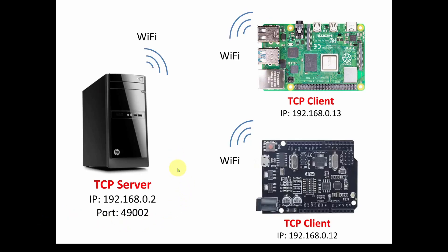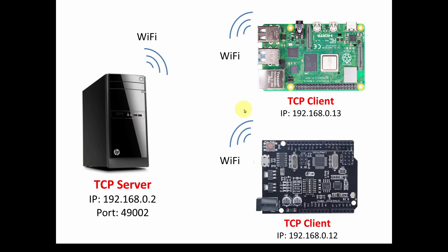Welcome back. Today we're going to show you how to set up a system of multiple devices that can communicate over Wi-Fi. On the top right we've got a Raspberry Pi, and on the right we've got an Arduino that has built-in Wi-Fi — a very inexpensive, only about ten-dollar Arduino Uno with built-in Wi-Fi. We also have a desktop operating as a TCP server. We recently did a video on Wi-Fi networking basics explaining what TCP, IP, and ports are and how to configure them.